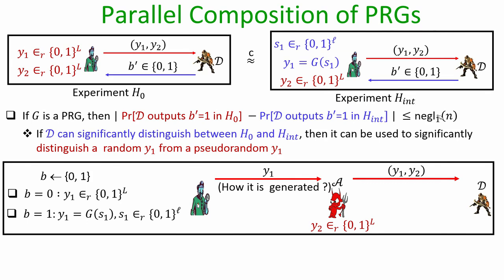Adversary A does not know which type of sample it forwarded to D - it is distinguisher D who identifies whether Y1, Y2 is generated as per H0 or H_int. Whatever the case, D outputs a bit B' indicating whether the sample is from H0 or H_int, and A outputs the same bit as D.